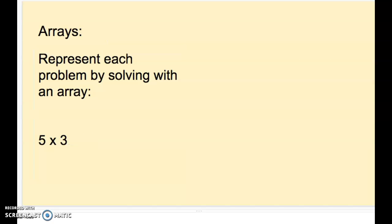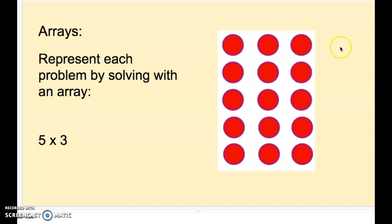Let's try another. Represent this equation using an array. Welcome back. So it looks like I have a five by three array, which means I have five rows, three columns. Five times three gets me 15.